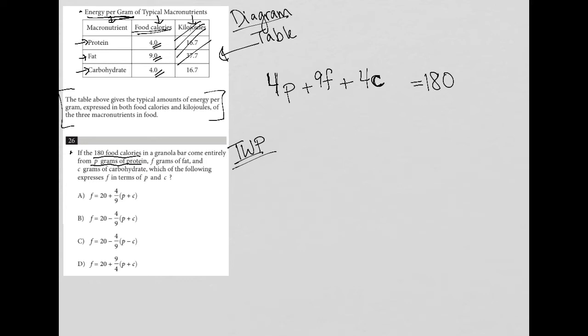So hopefully that makes sense, because there's four food calories per gram of protein. And we don't know how many grams of protein are in the granola bar. So that's why it's four times P. And the same thing for fat,